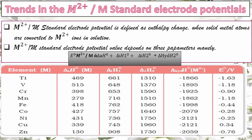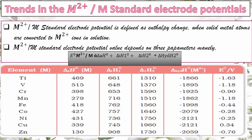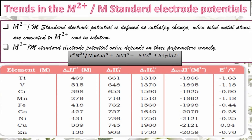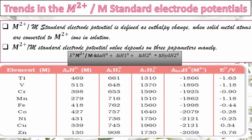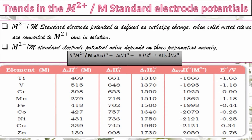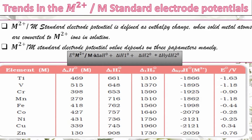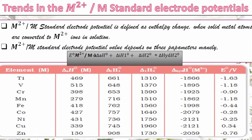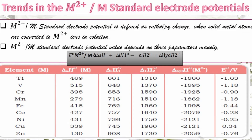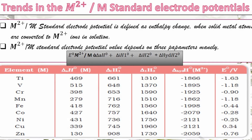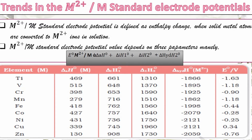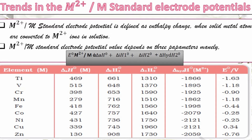The second enthalpy change is the first ionization enthalpy: from the gaseous atom, the most loosely bound electron is removed, requiring energy called the first ionization enthalpy. After forming the monovalent cation, the second loosely bound electron is removed, requiring energy called the second ionization enthalpy, giving the metal 2+ ion.